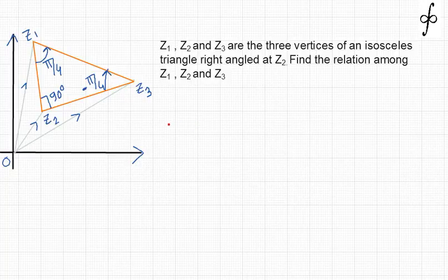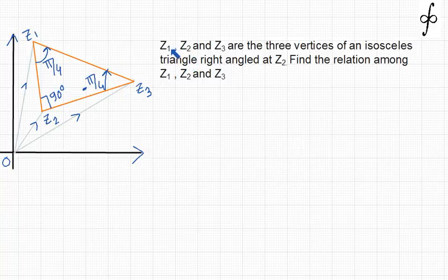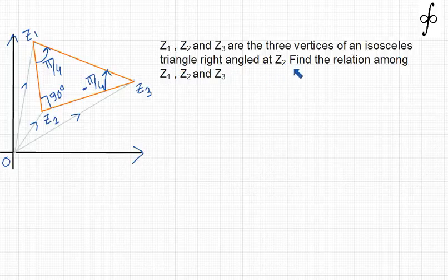Let's take an application of Coni's method, as we discussed in the last video. The problem is that Z1, Z2, Z3 are the three vertices of an isosceles triangle right-angled at Z2. Find the relation among Z1, Z2, Z3.